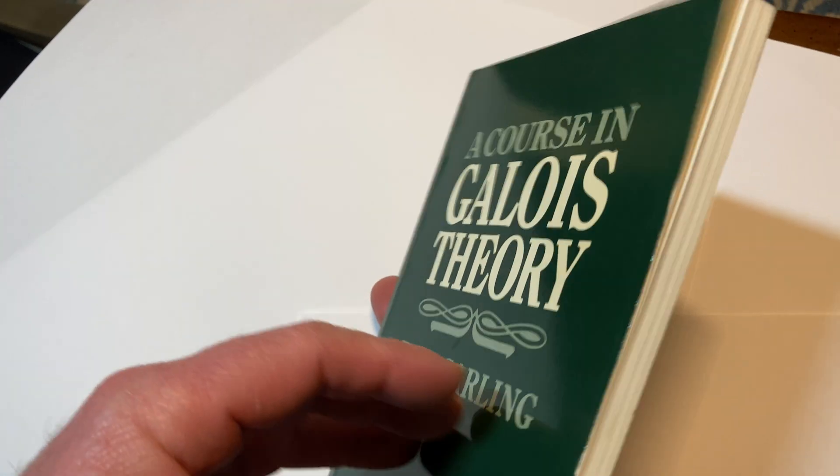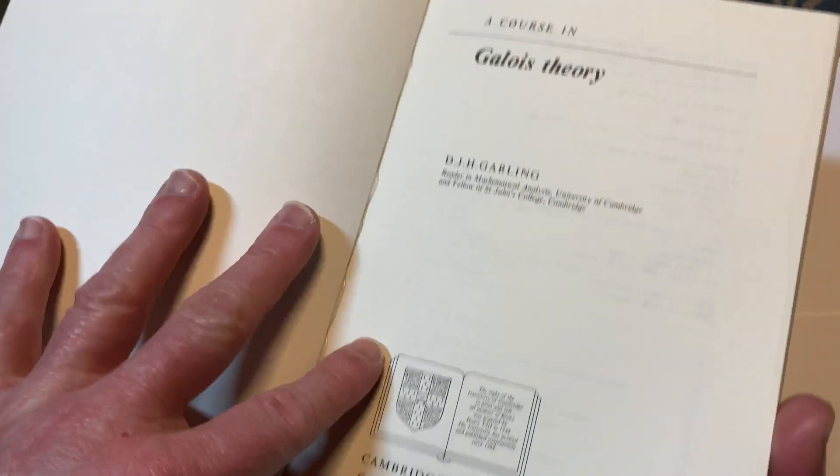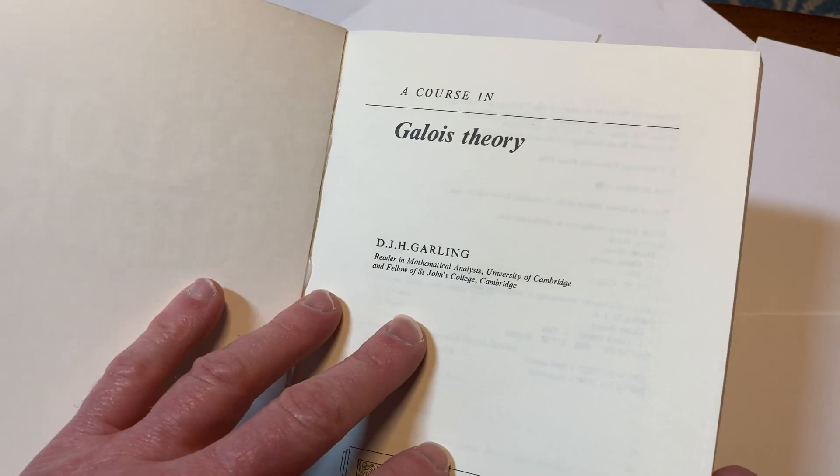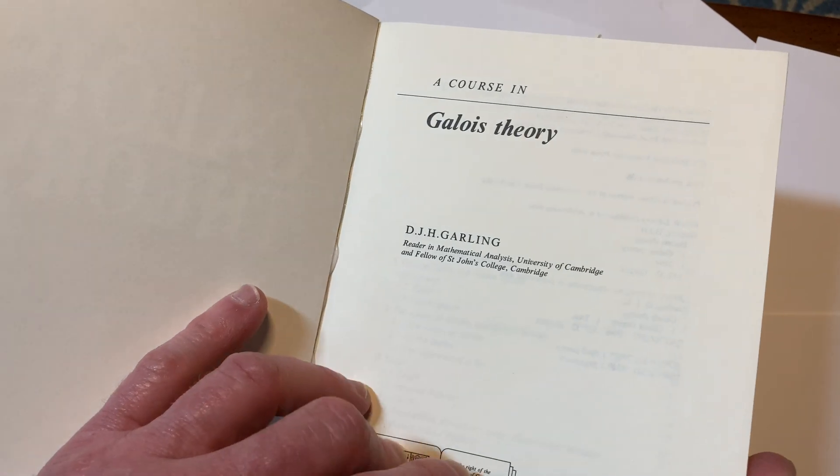Let's open it up and take a brief look. Cambridge University Press. A course in Galois theory, D.H. Garling.